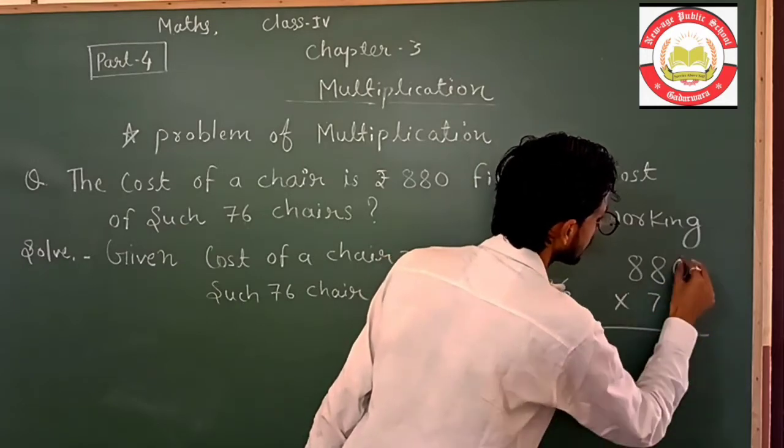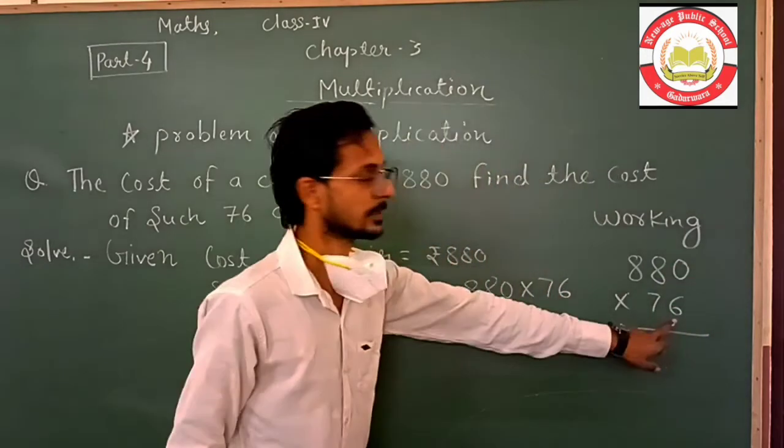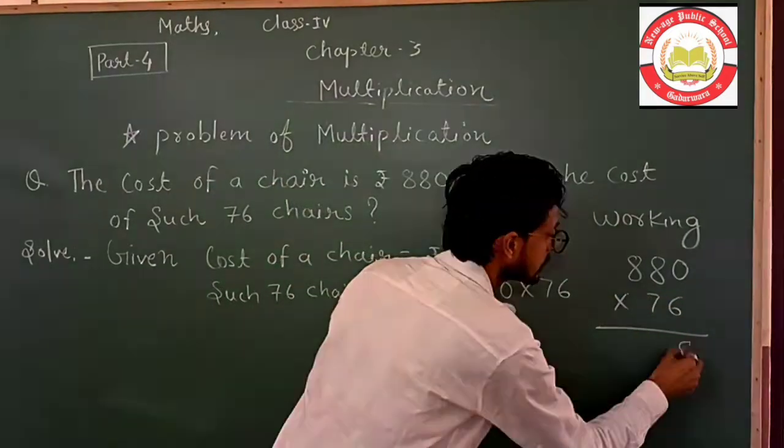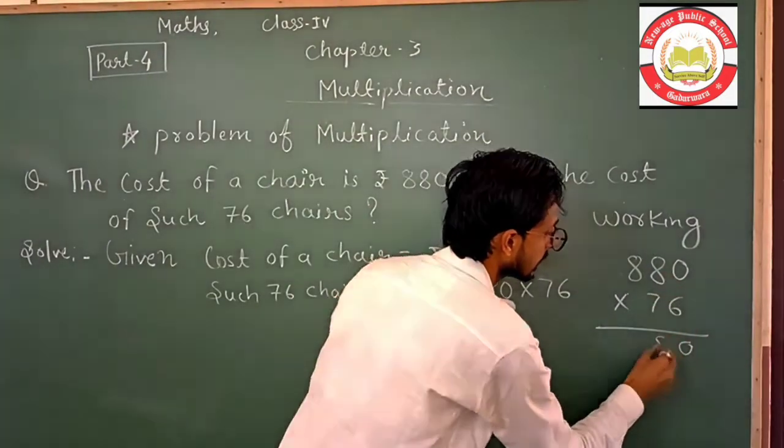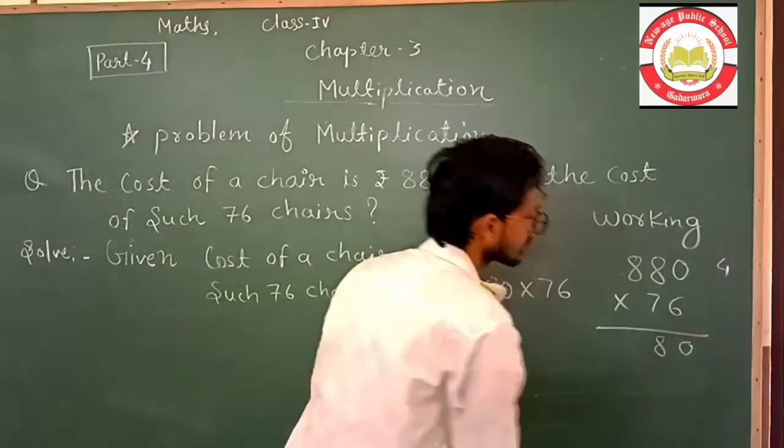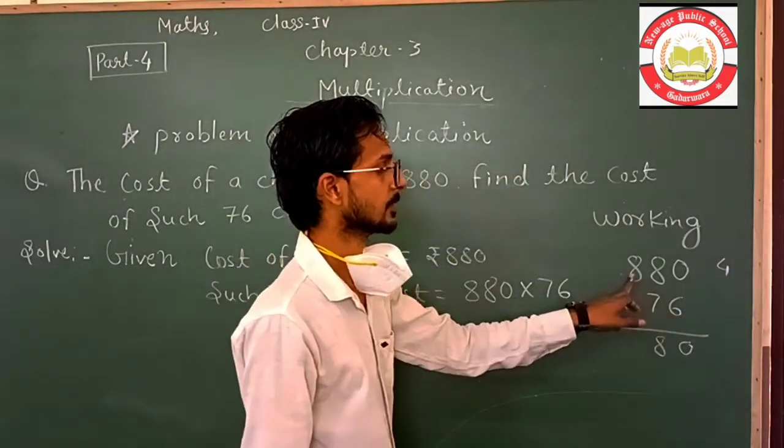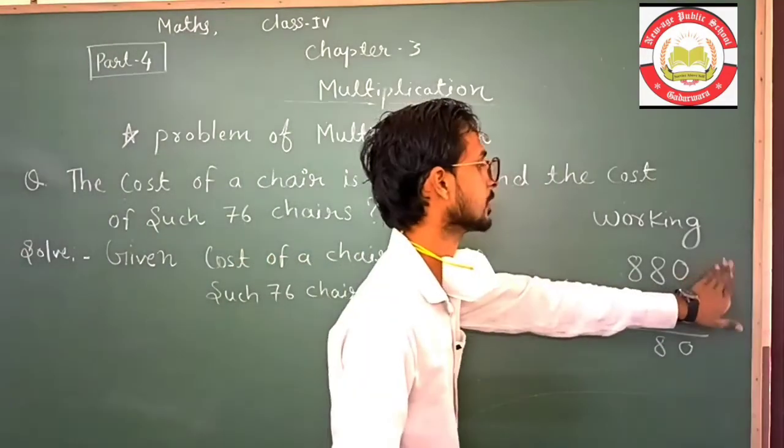Now the question is: the cost of a chair is rupees 880. Find the cost of such 76 chairs. One chair cost is 880. Now we will tell you how much the cost of 76 chairs?